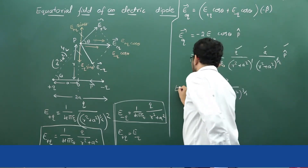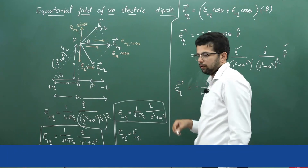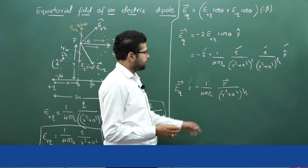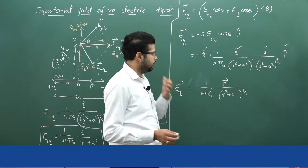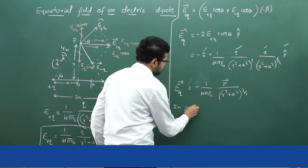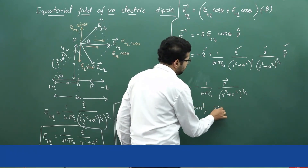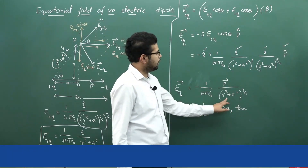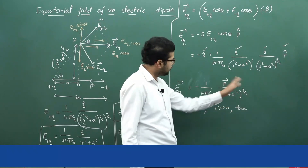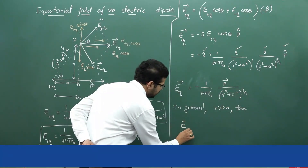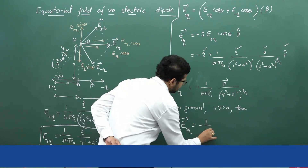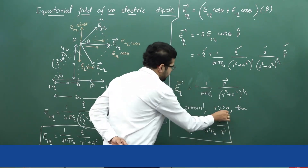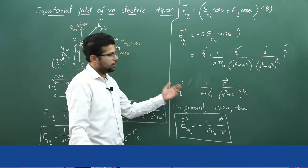Now we can do some approximation. In general, the length of the dipole is very small compared to the distance of the point where we calculate the electric field. So for a short dipole, r is much greater than a, and r squared plus a squared reduces to r squared. Then r squared to the power 3 over 2 becomes r cubed. So E equatorial equals minus 1 over 4 pi epsilon naught into p over r cubed. This is the equation for the equatorial electric field of a short dipole, while the previous expression is the general equation.